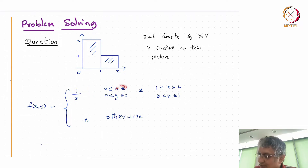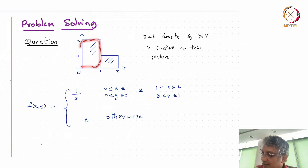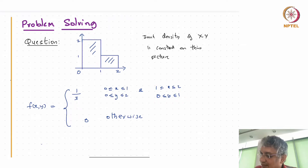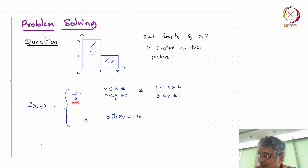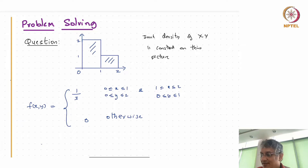The region is 0 < x < 1, 1 < y < 2 — that's this part. And this region is 1 < x < 2 and 0 < y < 1. So the joint density is 1/3 in each of these two regions and 0 otherwise.